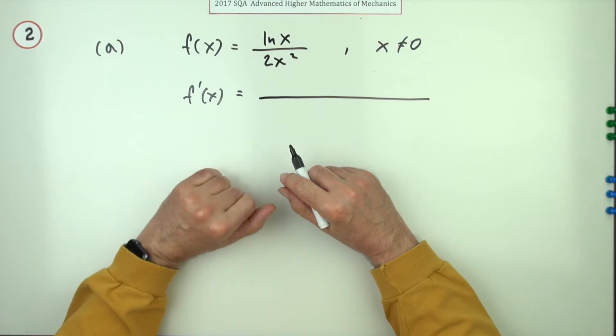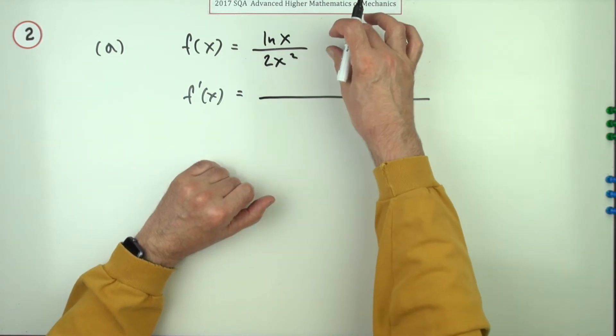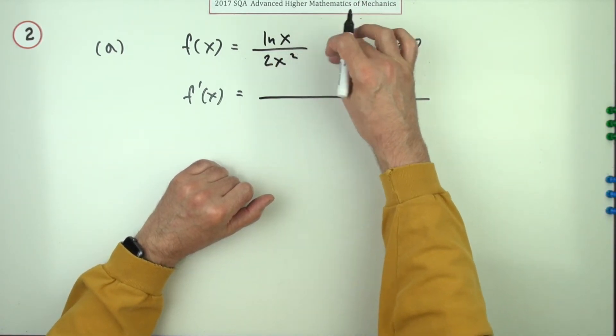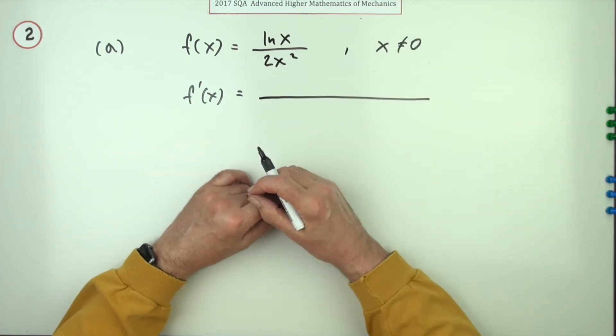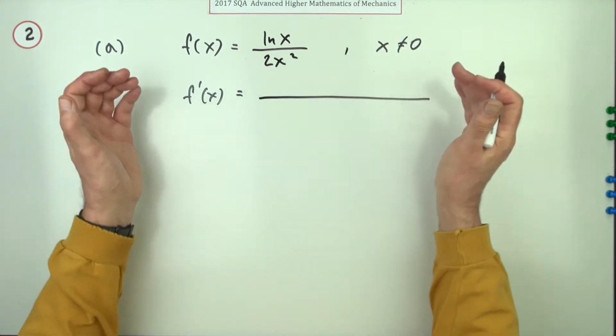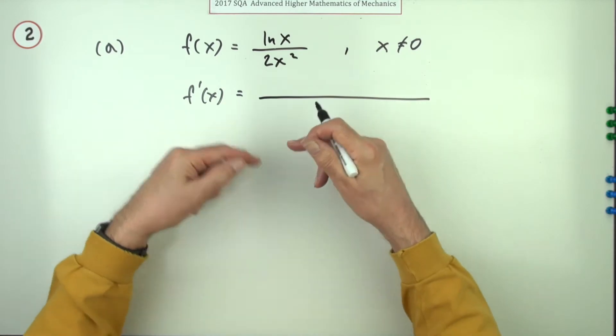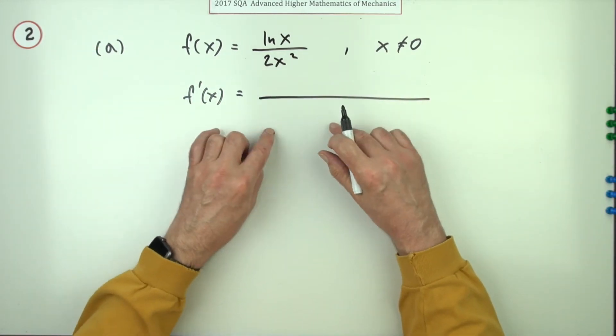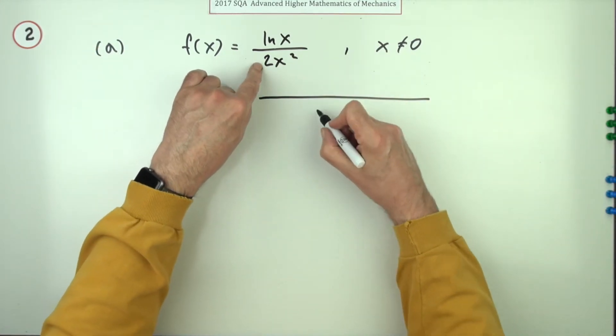So what's the pattern for this? Well there's two ways, you could rewrite that as 2x squared all to the power negative one and use the product rule, but there's no point because the quotient rule takes care of that. That's where it came from so let's just use the pattern for it.